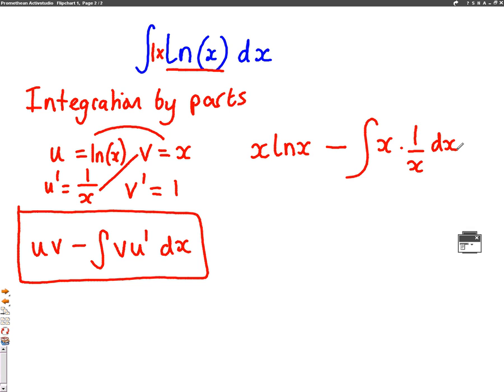I can simplify this a little bit. We've got x log x take away the integral. The x on top and bottom will cancel out, leaving us with just 1 dx.